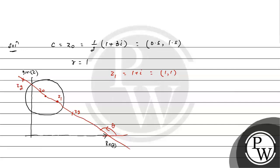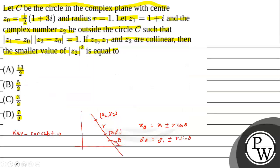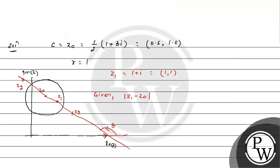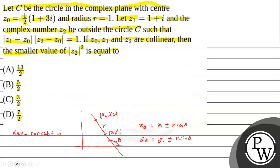To find the smaller value of |z2|², what is given? The relation is |z1 - z0|, that is, the distance between z1 and z0, times the distance between z2 and z0, is given as 1.